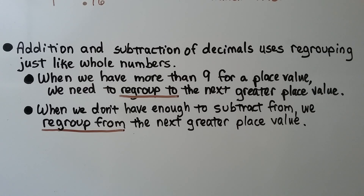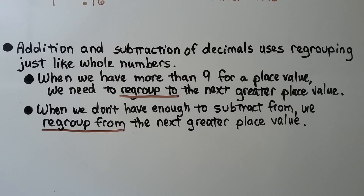Addition and subtraction of decimals uses regrouping just like whole numbers. When we have more than nine for a place value, we need to regroup to the next greater place value. When we don't have enough to subtract from, we regroup from the next greater place value.